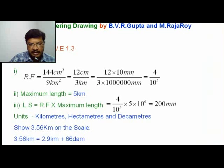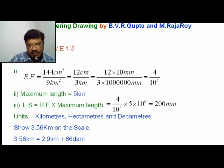This is a Vernier Scale problem. In this problem, the RF value is not given — you have to calculate it. The RF value is obtained as 4 by 10 to the power of 5, and the maximum length is 5 km.